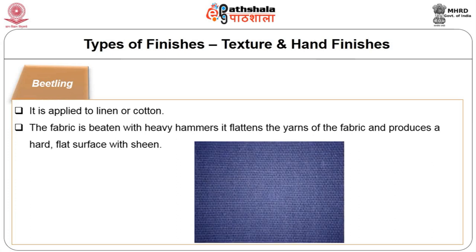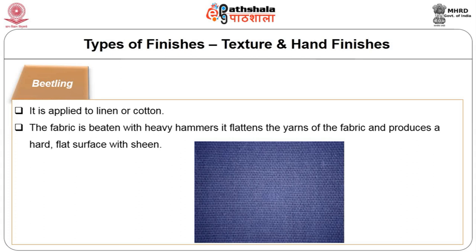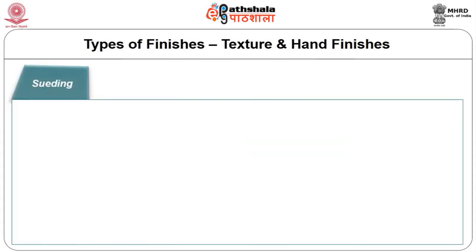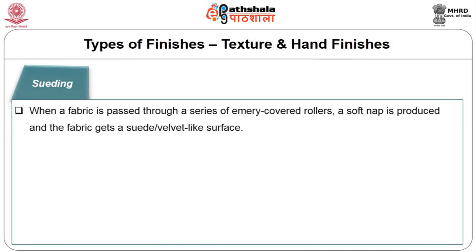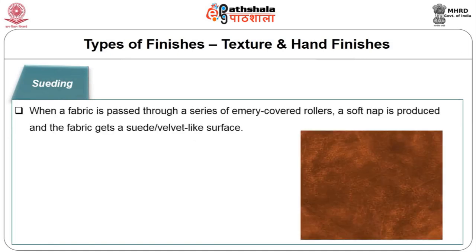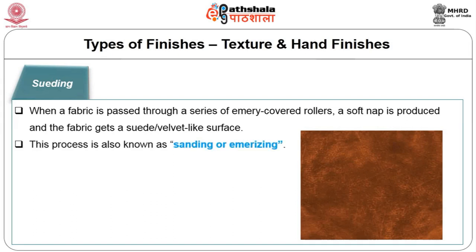Beetling process is applied to linen or cotton. The fabric is beaten with heavy hammers, which flattens the yarns and produces a hard flat surface with sheen. Suiting is also called peach finish — when a fabric is passed through a series of emery-covered rollers, a soft nap is produced and it gets a suede velvet-like surface. This process is also called sanding or emerizing.